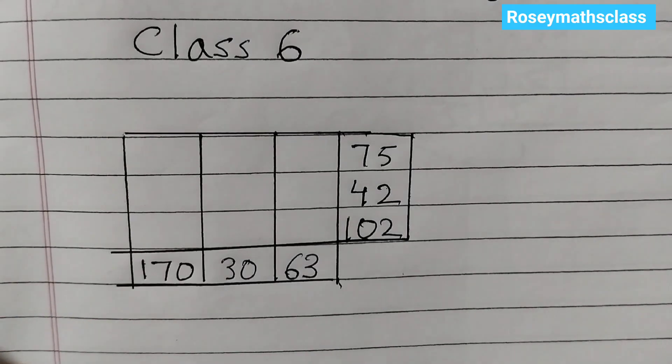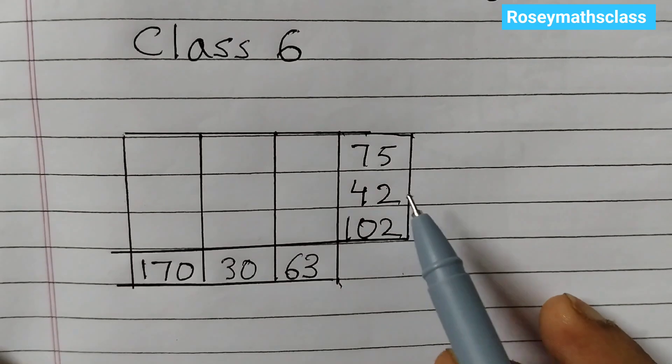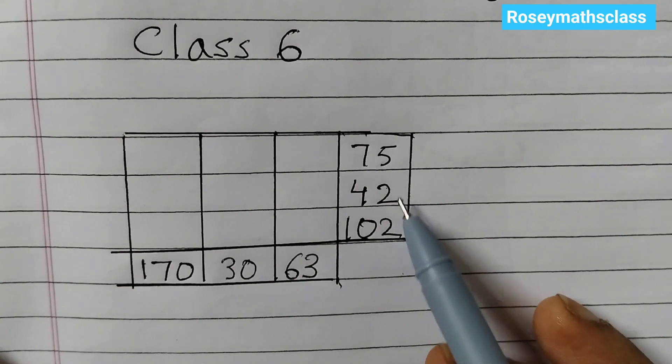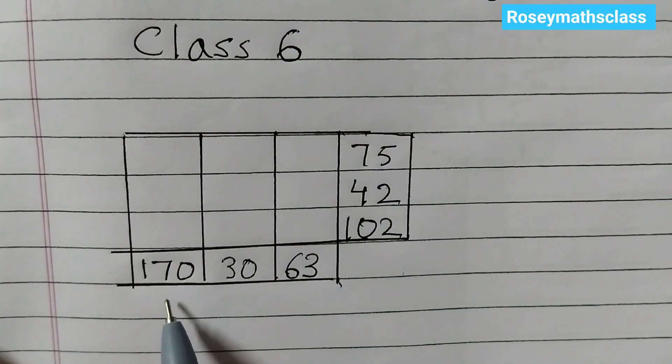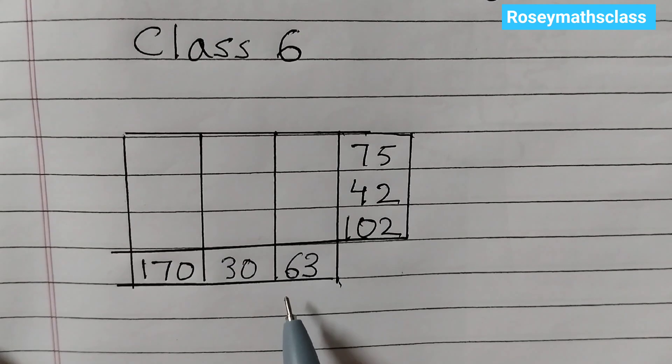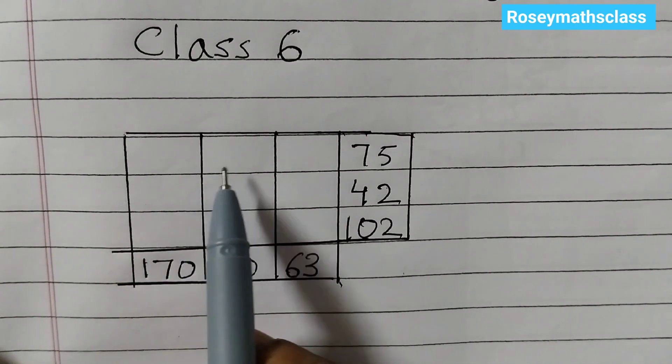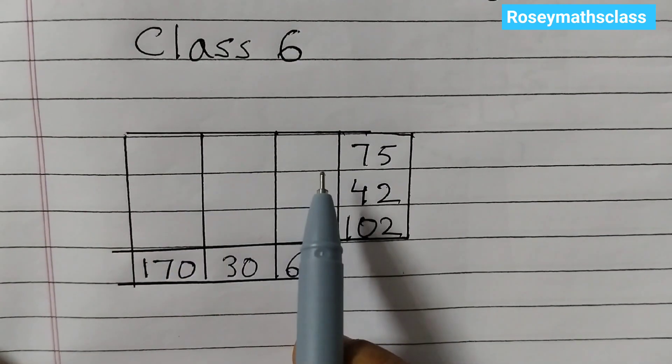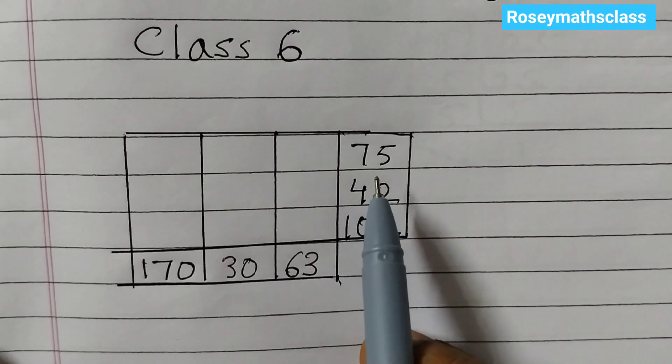Hello students, welcome back to Rosymats class. Today we shall solve this puzzle where some numbers are given: 75, 42, 102, and 170, 30, and 63. We need to fill the grid with prime numbers so that the product of each row, that means whatever we fill up here, when we multiply all these three numbers we must get 75.